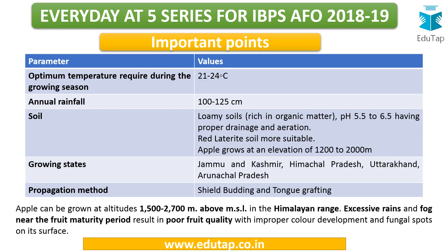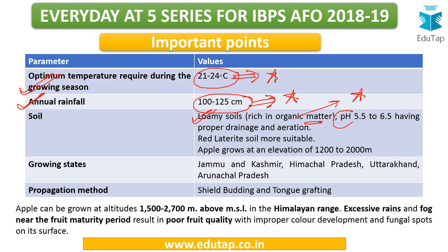Looking at important growing parameters: the optimum temperature during the growing season is 21 to 24 degrees Celsius — this was also asked in lecture one. Annual rainfall required is 100 to 125 centimeters. The kind of soil required is loamy soils rich in organic matter. The pH level required is 5.5 to 6.5. One other important point: the most suitable soil for growth of apples is red laterite soil, which is brick in color.